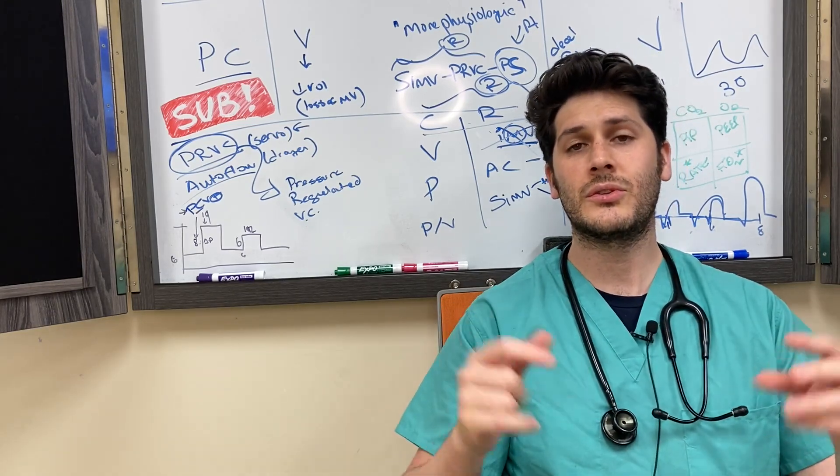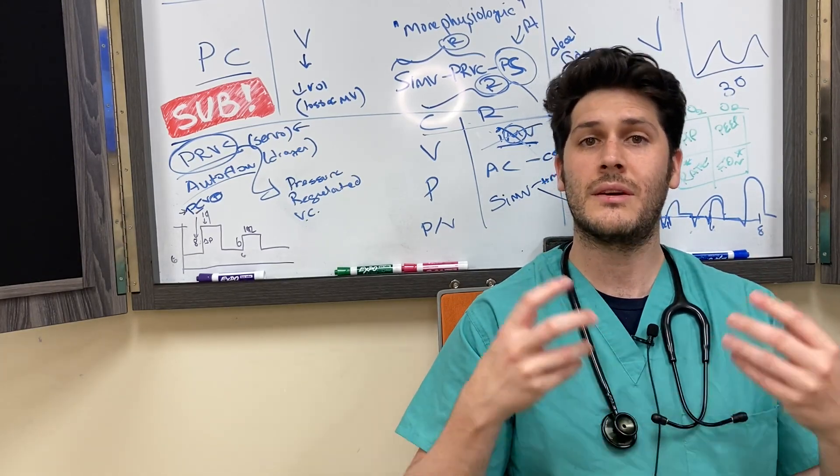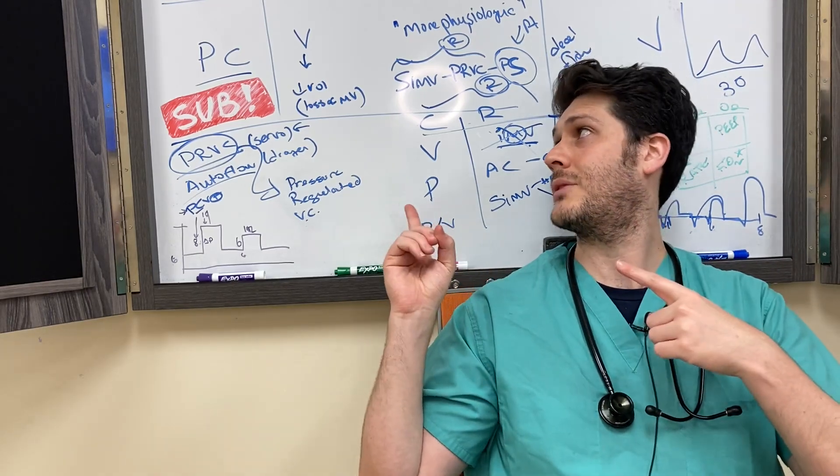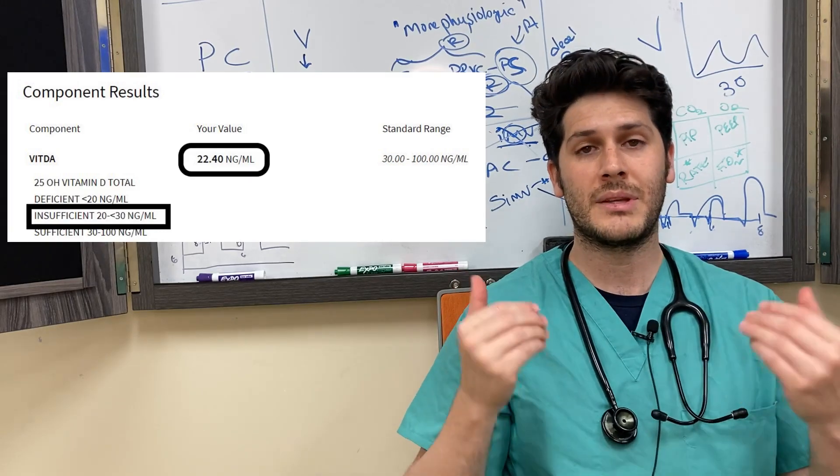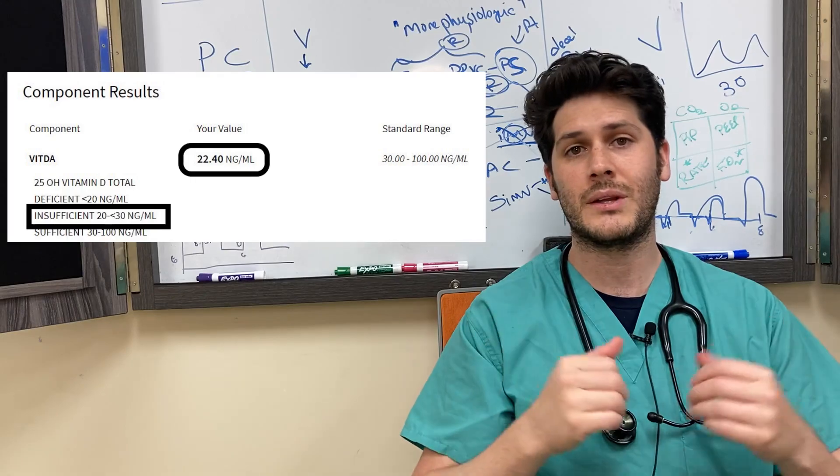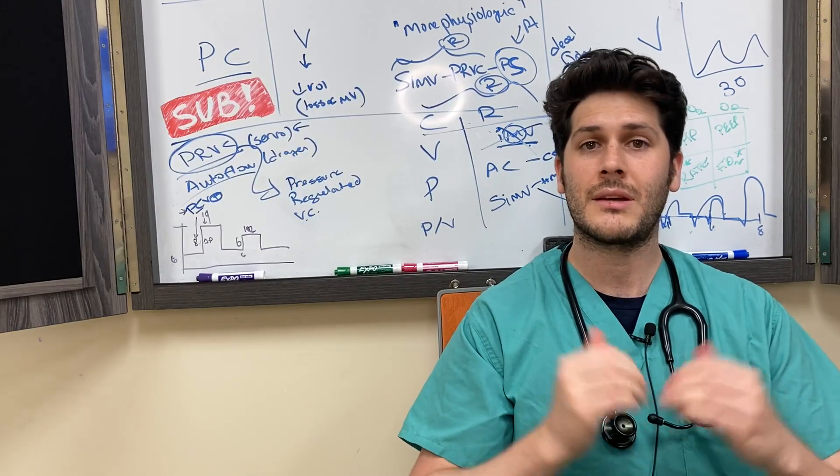Conclusion: do not just take vitamin D. Do consult your doctor first. Get your levels checked, like I did, because I do take my own advice. And here it is, I was actually found to have vitamin D insufficiency. My level's 22, that's almost at 20, which is bad. So, I will take vitamin D.